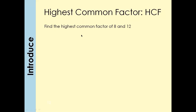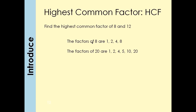Let's have a look at this example. We want to find out the highest common factor, or HCF, of 8 and 12. If these are small numbers you simply write the factors like we just did. Factors of 8: 1, 2, 4 and 8. Factors of 20: 1, 2, 4, 5, 10 and 20.